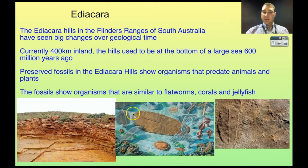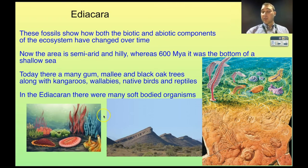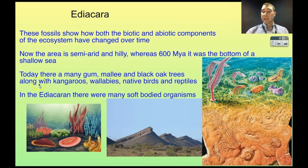Here we can see a fossil — this is a Dickinsonia fossil, and here is what it's imagined it might have looked like when living. A very weird biota. These fossils show that both the biotic and abiotic components of the ecosystem have changed over time. At the moment the area is semi-arid and hilly, with trees such as gum, mallee, and black oak. In terms of animals there are kangaroos, wallabies, native birds and reptiles — this is what it looks like today in the Flinders Ranges.